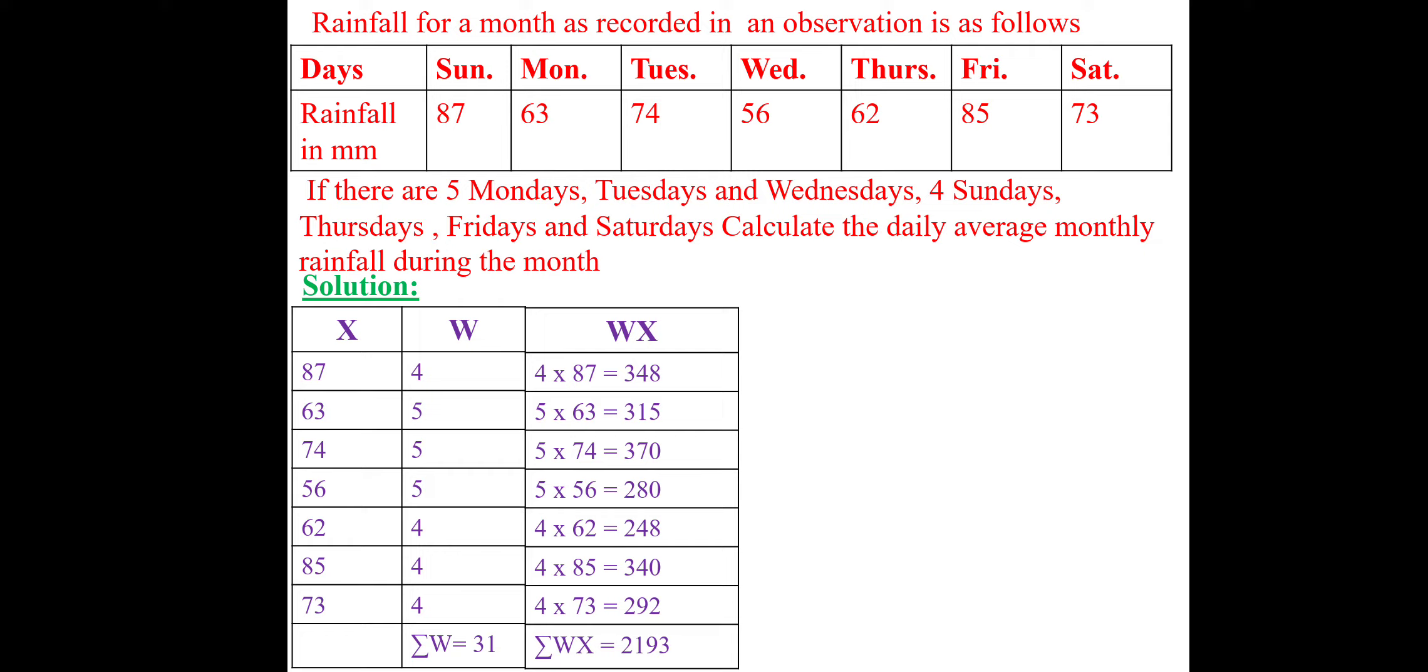So, this is the way we can follow that. Then, summation WX divided by summation W: 2193 divided by 31. Simplify the value: 70.741 weighted mean. This is another way. The problem is a big one. To understand what is X, what is W, then you can calculate.